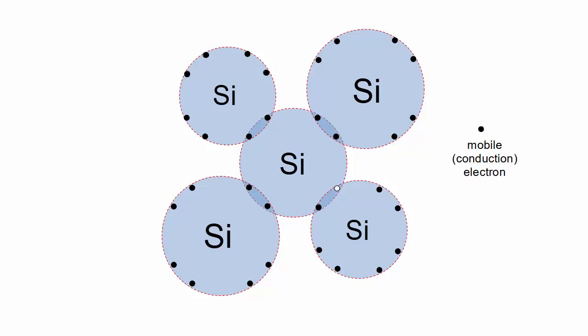This is called a mobile electron, or conduction electron, because it can carry an electric current. The empty space left behind is a hole, which causes the two adjacent atoms to have a net positive charge.